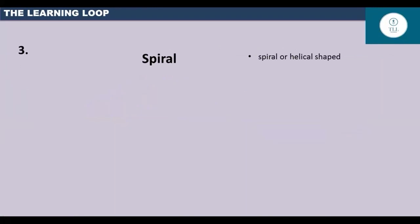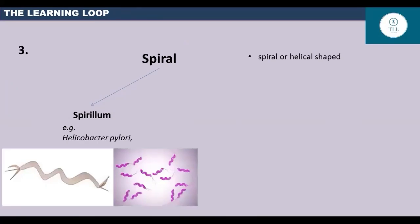Some bacteria are spiral or helical in shape. They are of two types. One is spirillum. It is rigid and bears flagella. Example, Helicobacter pylori.